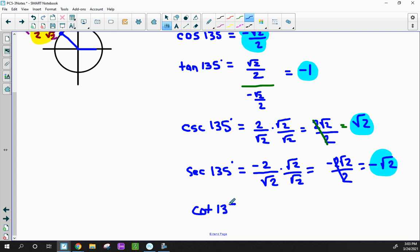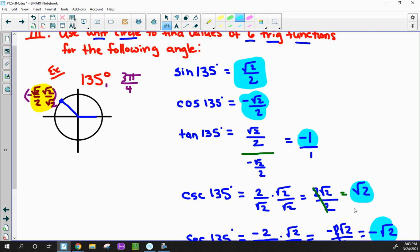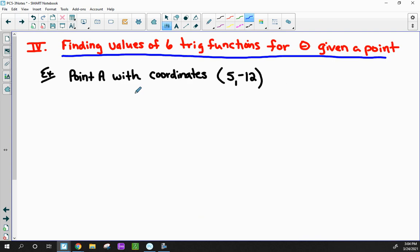The cotangent of 135 is taking my tangent answer, flipping it upside down. But in either case, negative 1 divided by 1 or 1 divided by negative 1, same answer. So that one should have been easy. Negative 1. So there are my 6 trig functions, or ratios, for a 135 degree angle around the unit circle. That's much like what you did on your trig table.